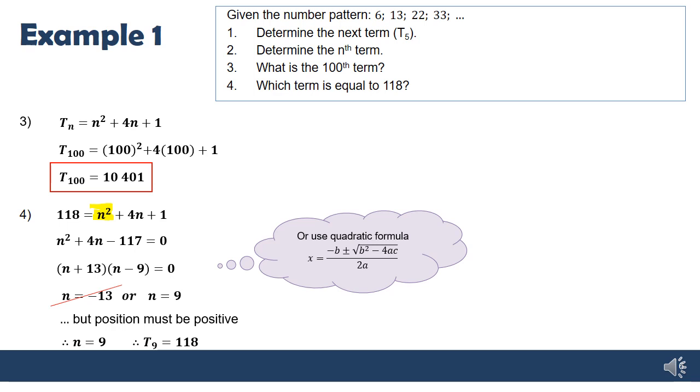And our only solution is n equals 9. Therefore, the ninth term is equal to 118. And normally either of these two lines would get the mark. But I like to write T9 equals 118 to just be complete.